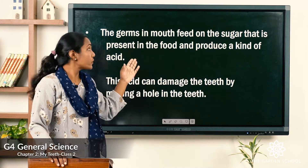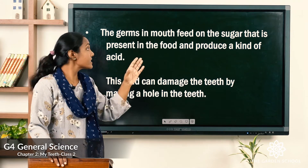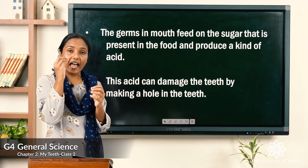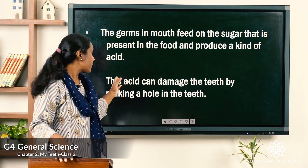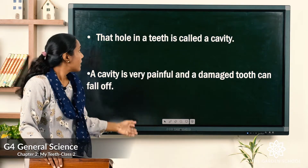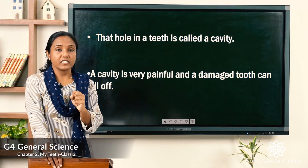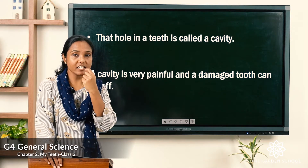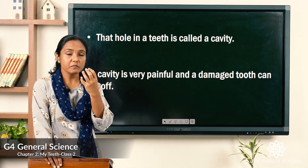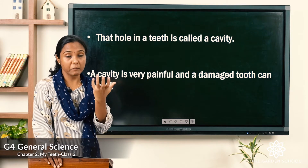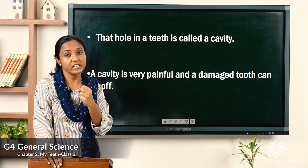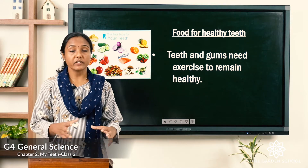The germs in the mouth feed on the sugar present in the food and produce acid. That acid, when it stays on the teeth, damages them by making a hole — which is called a cavity. A cavity is very painful; we won't be able to bear that pain, and we have to show it to the dentist. When a tooth is totally damaged, it may have to be removed.